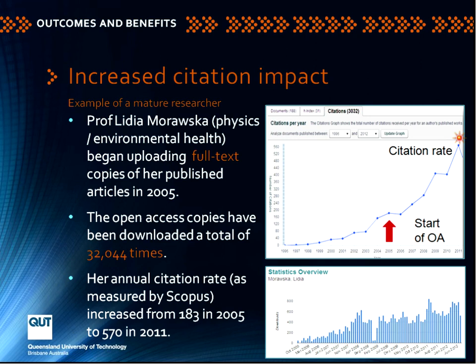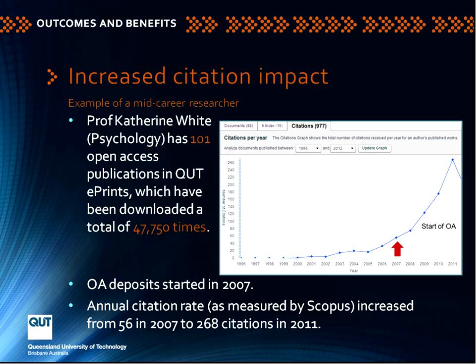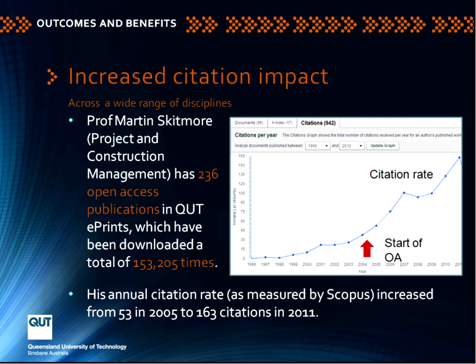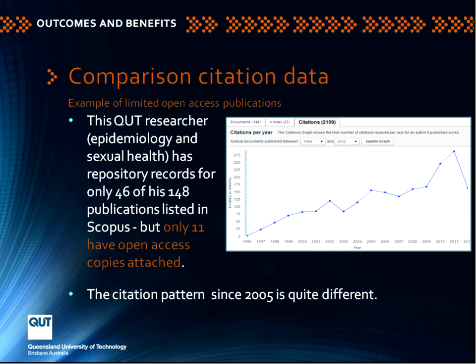Here is another case involving a mid-career researcher — a psychologist — and you see very much the same kind of pattern. Greatly increased citation rates seem to be associated with being more visible in the open. And here is a mature researcher in construction management where we've got a similar climb in the citation rate. While we don't argue cause, there is very clear correlation. In contrast, we have a researcher in another field who has been less comprehensive in depositing full text, and has a growing citation rate but you don't see that same sharp, steep climb.